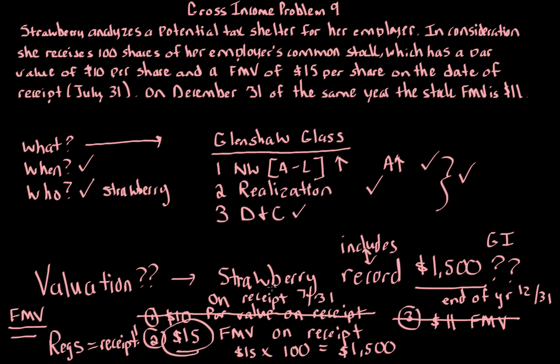If you think about this, it makes sense. Why would you look at the end of the year? Think about a taxpayer that receives the stock on July 31st and then on August 1st turns around and sells it for the $15. They would get the $1,500. So it makes more sense to use this $1,500 on the date that it's actually received. When you receive the actual property, that's the actual value we use on receipt. This will help you whenever you have a transaction with multiple valuation dates.